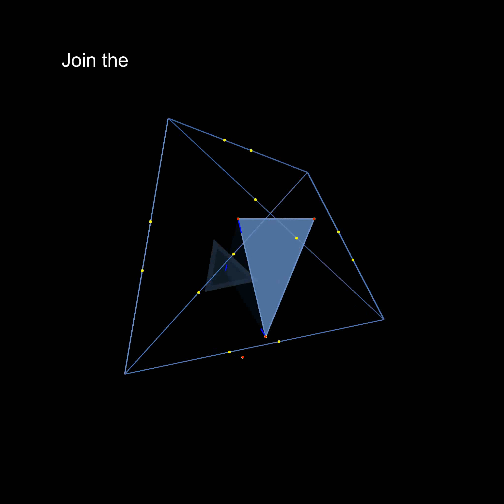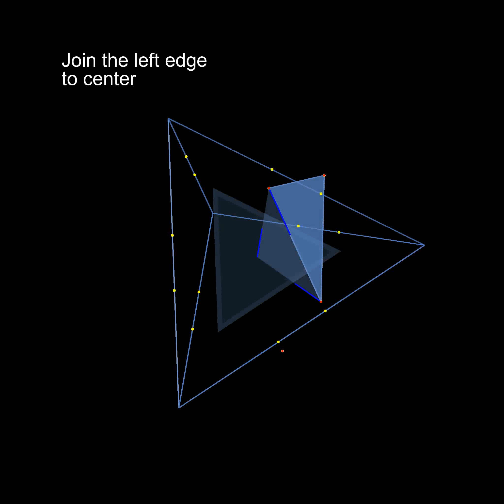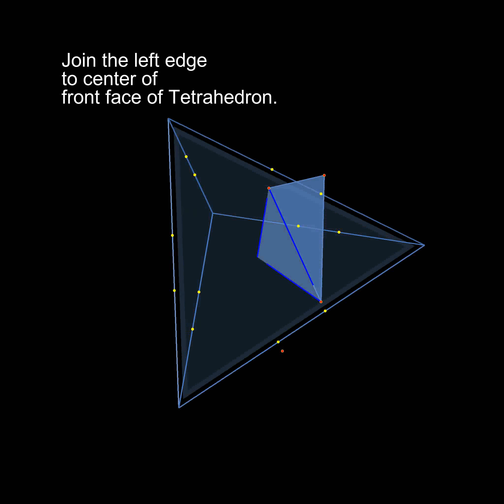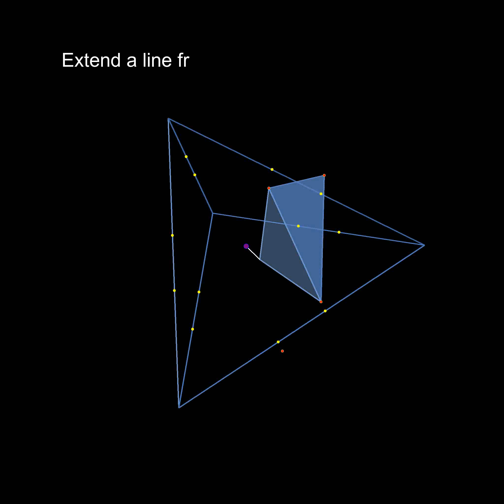Now join the left edge of this triangular face to the front face, the center of the front face of the tetrahedron. And connect the center of the tetrahedron to this center of the front face and extend that line until you get this plane. We have a four-sided plane so far.